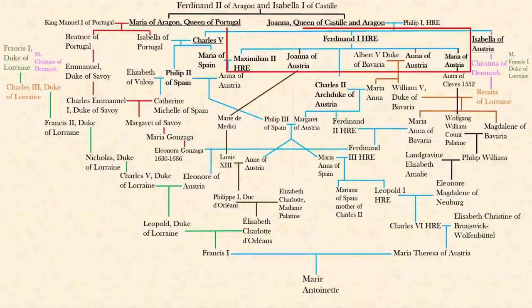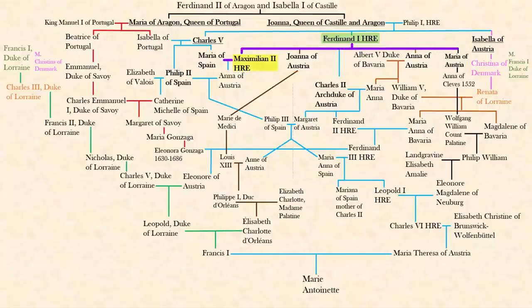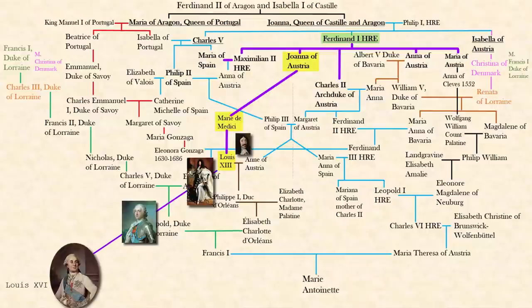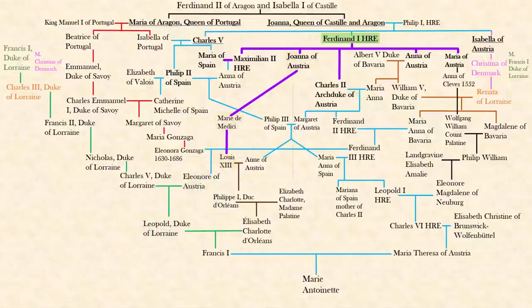While the Portuguese and Spanish sides start their next generation, let's move to the Austrian side. Ferdinand the First had a bunch of kids: Maximilian II who married into Spain, Joanna, Archduke Charles II, Anna, and Maria. Joanna married into the French line and had Marie de Medici, who had King Louis the 13th of France — the direct ancestor to Marie Antoinette's husband Louis the 16th. Maria of Austria had Anna of Cleves, who had Wolfgang William Count Palatine — we'll deal with him later.